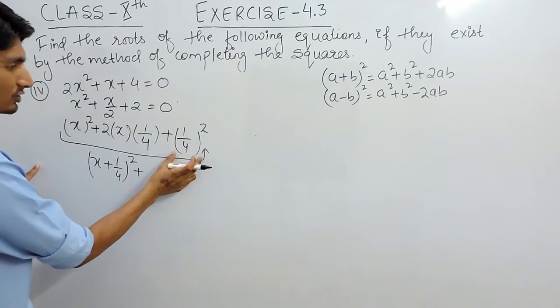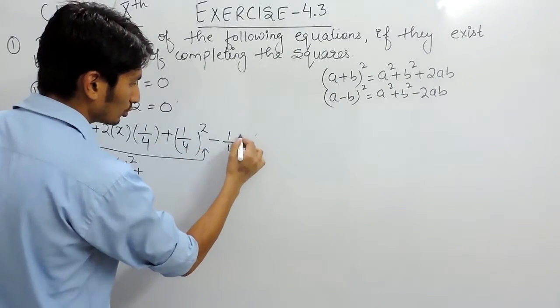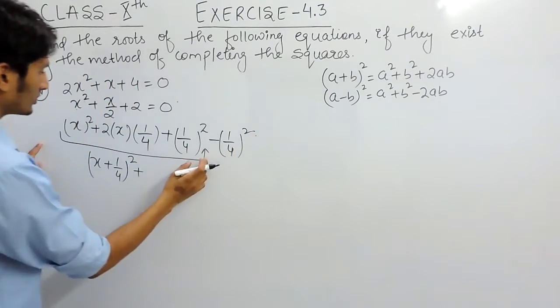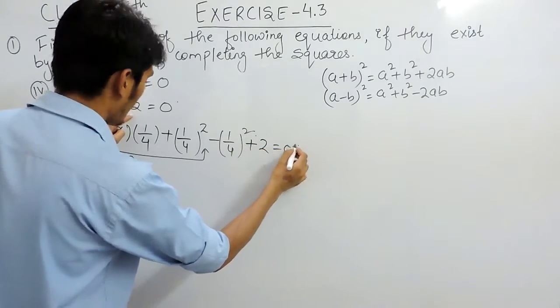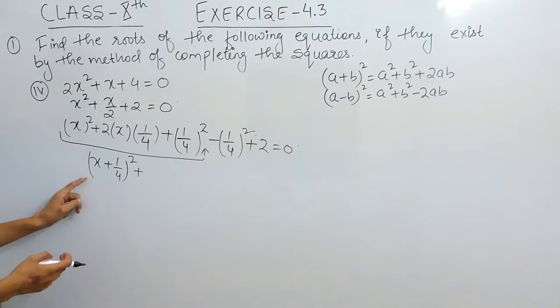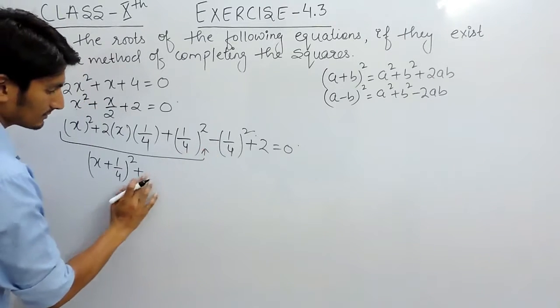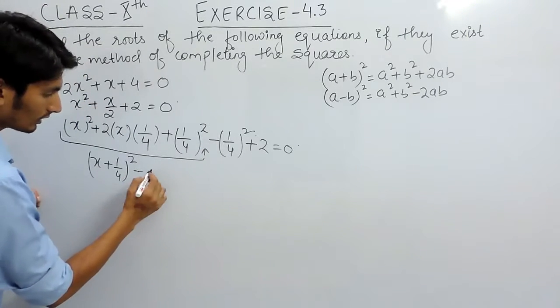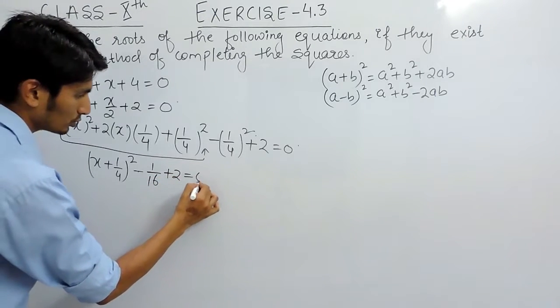We have only added square term to this. We have to subtract also so that the result of this equation do not get changed and after that this positive 2 will be made as it is. So in place of this we can write x plus 1 upon 4 whole square. And in place of this this is basically 1 upon 16 and plus 2 equals to 0.